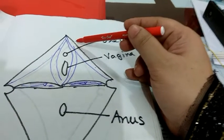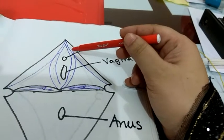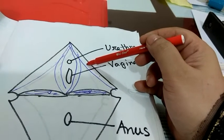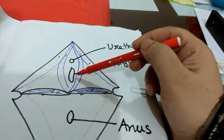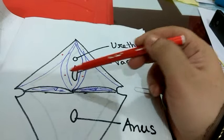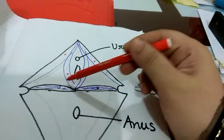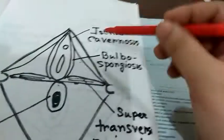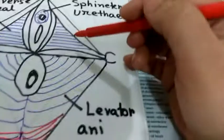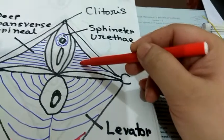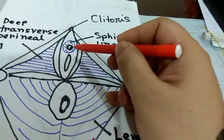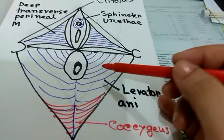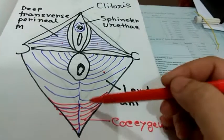Three pairs of muscles are present in the superficial perineal pouch: the ischiocavernosus, the bulbospongiosus, and the superficial transverse perineum. Deep to these muscles are the deep transverse perineum and the sphincter urethrae, which are present in the deep perineal pouch. In the anal triangle, two muscles are present: levator ani and coccygeus.